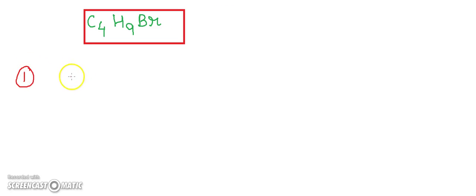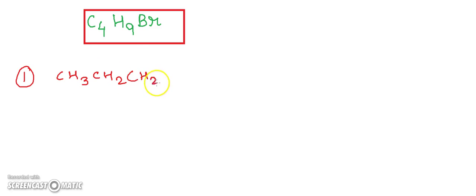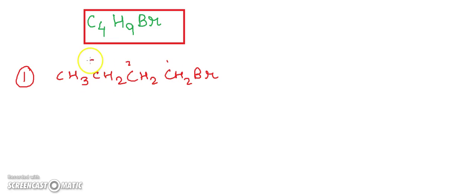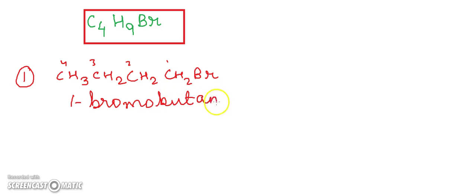The first isomer is CH3–CH2–CH2–CH2Br. The name of this isomer is 1-bromobutane.